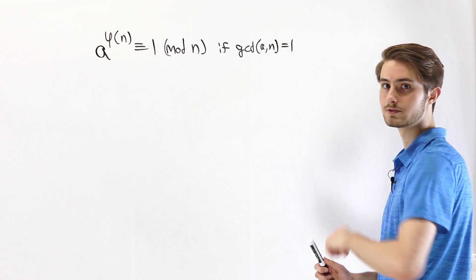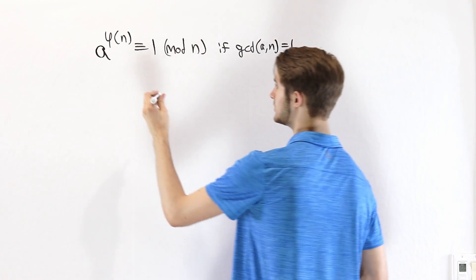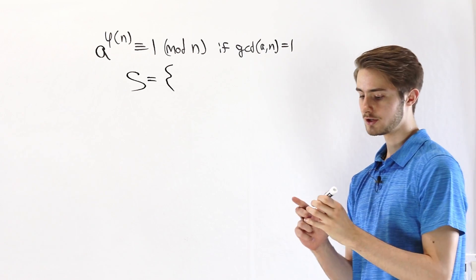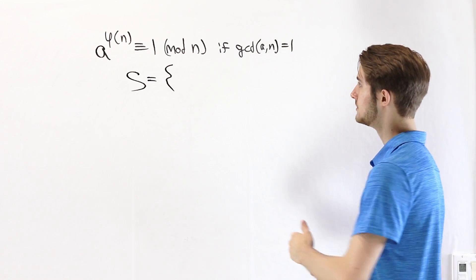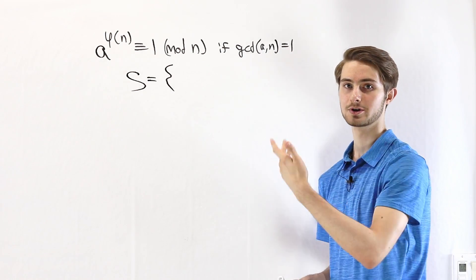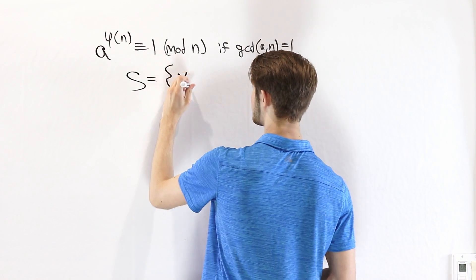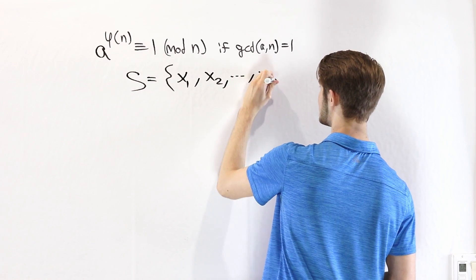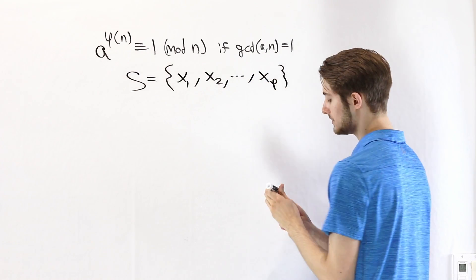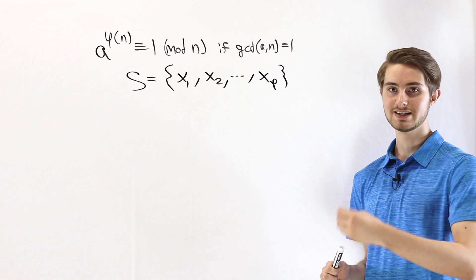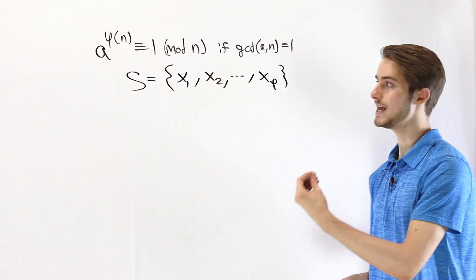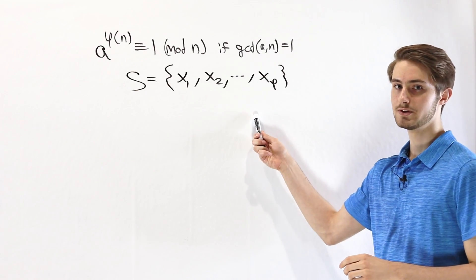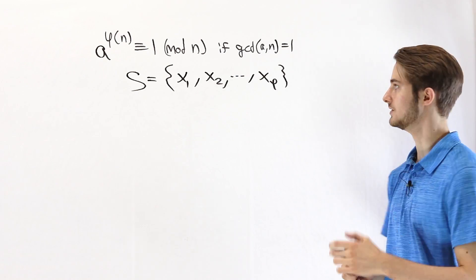The start of the proof of Euler's Totient Theorem is pretty simple. We're going to construct a set, which we'll call S, that includes all of the numbers between 1 and n that are coprime to n. So let's say we're looking at x₁, x₂, and so on up to x_φ. By definition, there are φ(n) of these numbers.